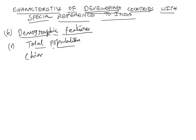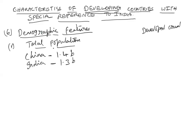Regarding total population size, China is currently the highest populated country at 1.4 billion, and India is soon going to overtake with 1.3 billion — currently the second largest. It is said that every fifth person in the world is an Indian, and every third poor person in the world is also an Indian. The third largest is the USA at only 340 million, showing a huge gap.